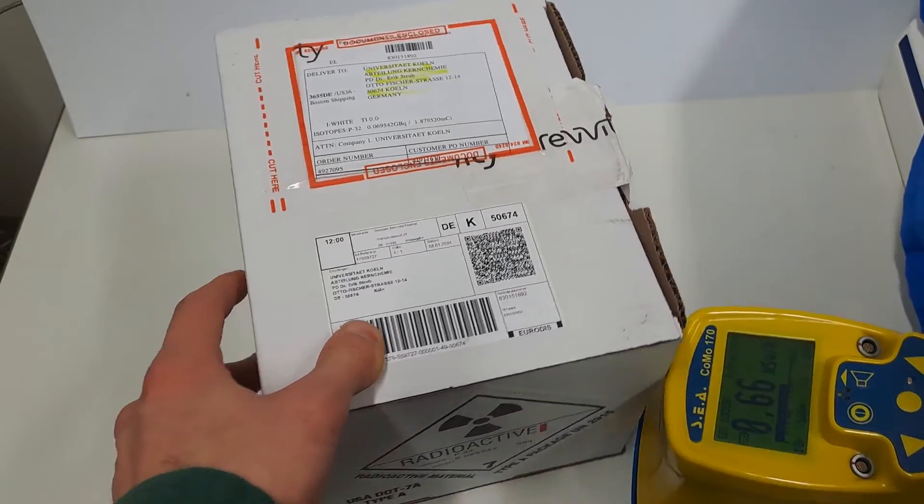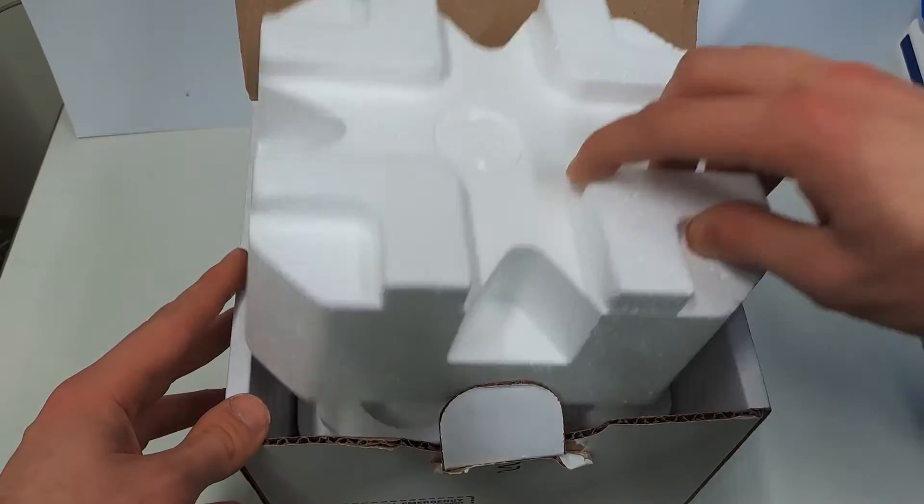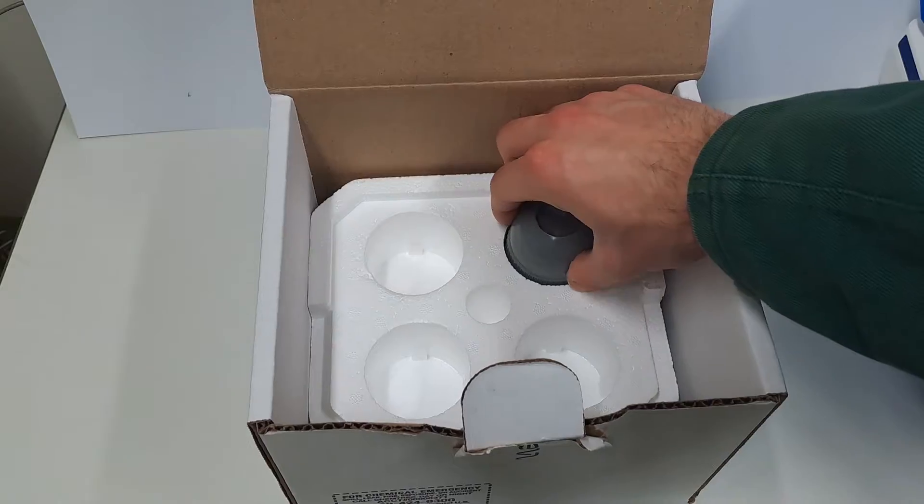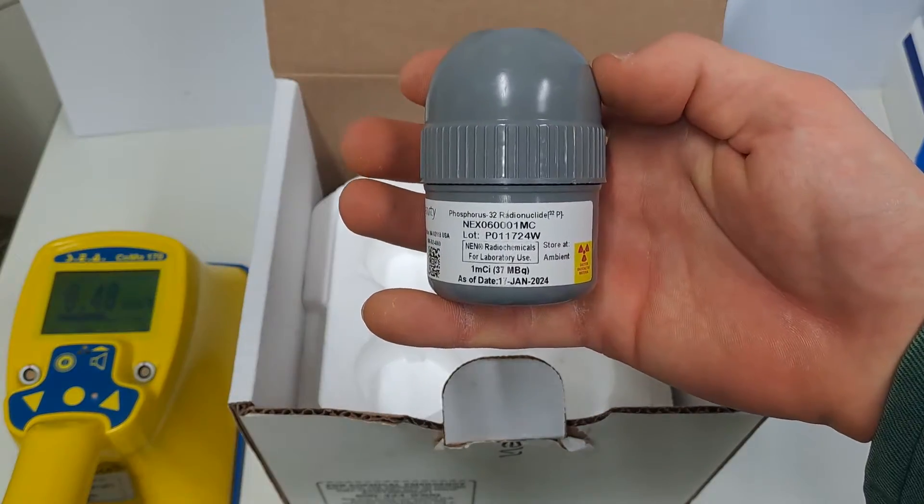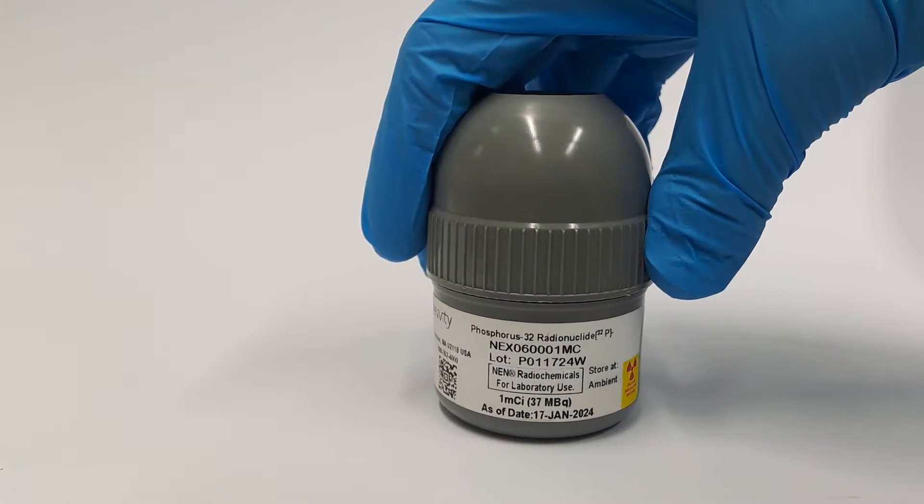And the surface dose rate of the packaging is approximately 1 µSv an hour. This is far from concerning or even dangerous. Let's unpack it and see a capsule with all the important information. 37 MBq of Phosphorus 32.